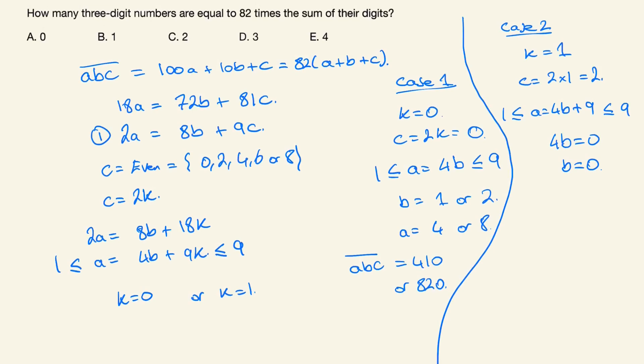If B equals 0, this means A equals 0 plus 9, or A equals 9. And therefore the solution for ABC here is 902.